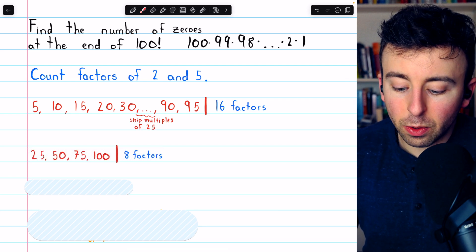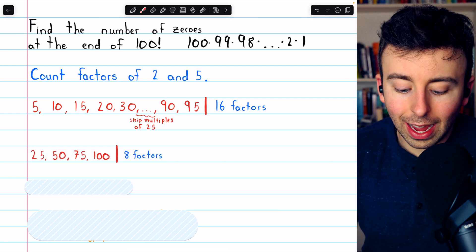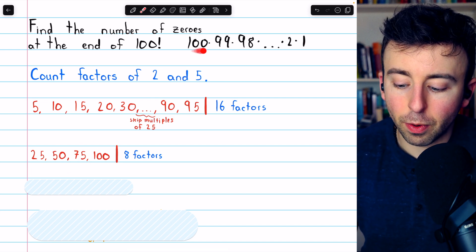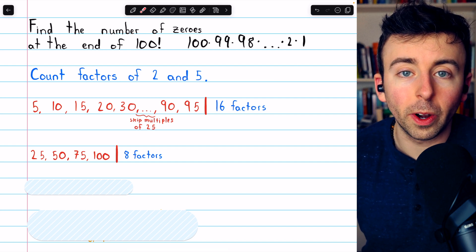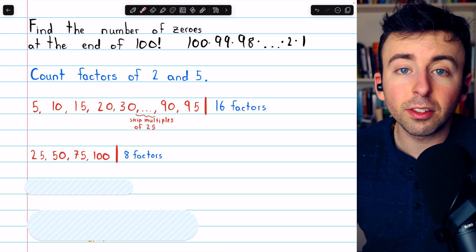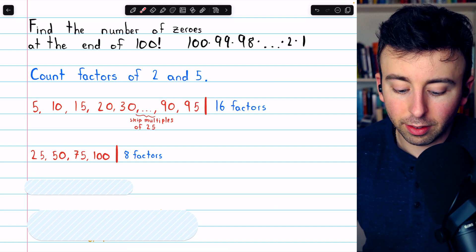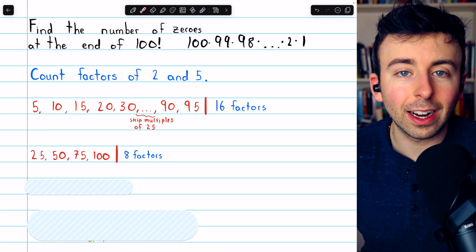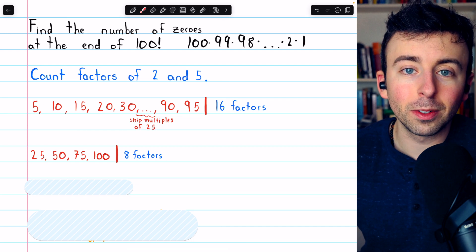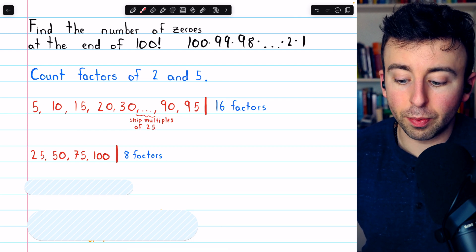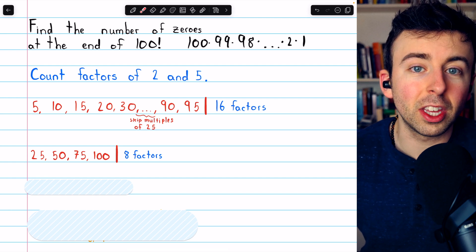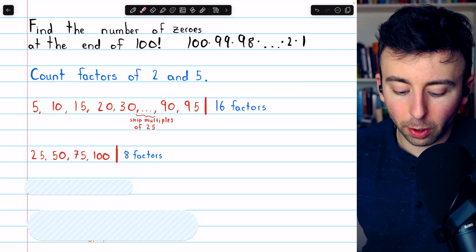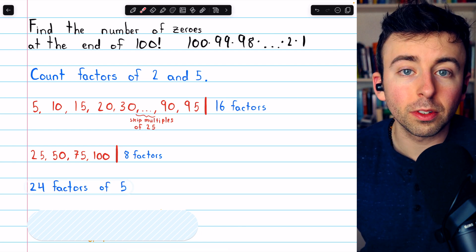Then let's go back and count the multiples of 25. That gives us 25, 50, 75, and 100. These are all in the product that defines 100 factorial, and each of these gives us 2 more factors of 5 — so that's 8 more factors. We don't have to count numbers that are multiples of 5 cubed because those are not present in this product; 5 cubed is 125, which is obviously too big. So in total, we have 24 factors of 5.